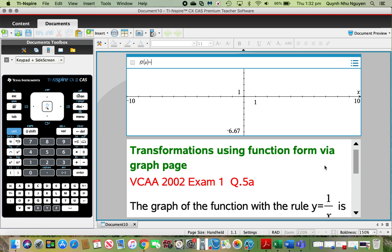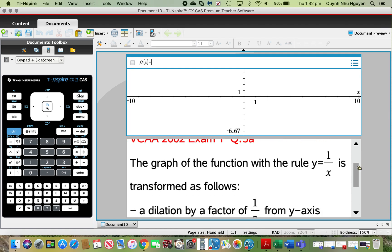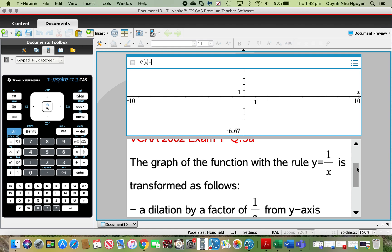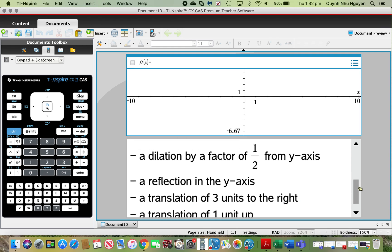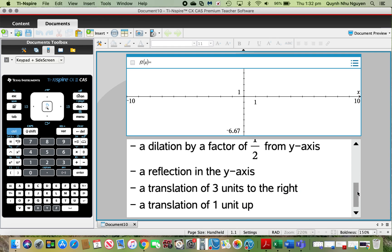So first, let's take a look at a past VCA question. The graph of the function with the rule y equals 1 over x is transformed as follows: a dilation by a factor of a half from the y-axis, a reflection in the y-axis, a translation of three units to the right, and a translation of one unit up.